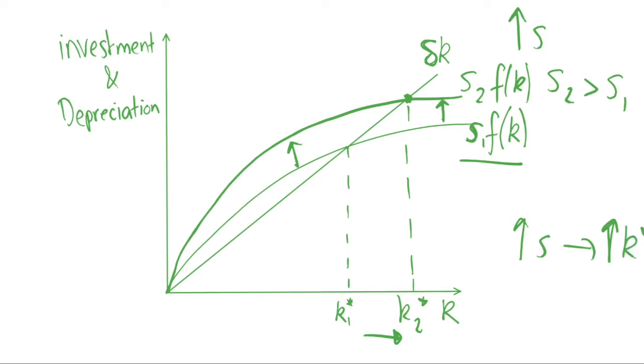It increases our steady state capital and that in turn is going to increase our output per capita because as we know y equals this function of k. So if we increase k, we're going to increase y.